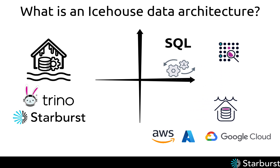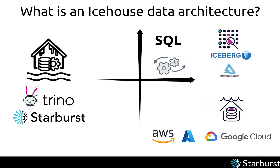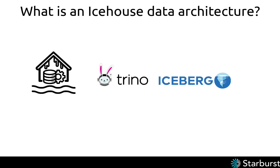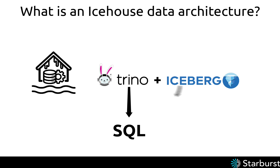Data lake houses take all that's great about data lakes and add additional metadata. This metadata is collected by one of three modern table formats: Apache Iceberg, Delta Lake, or Hudi. Although Iceberg is related to Delta Lake and Hudi, it goes far beyond either in its openness, its features, and its universality. Importantly, Iceberg is also designed to work with Trino out of the box — in fact, Iceberg was originally developed with Trino in mind, and some of the very first queries ever run on Iceberg were run using Trino.